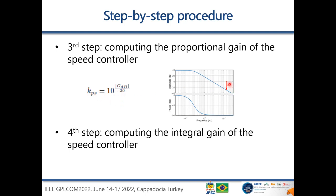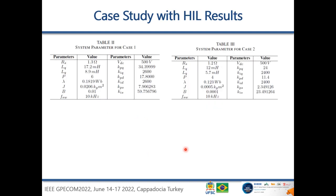The fourth step computes the integral gain of the speed controller using the previously derived quantities. Having completed the full step-by-step design procedure, it is applied to two different machines. Case one and case two have different system parameters — for instance, the first machine has six poles and the second has four poles. Following all the steps, the controller parameters are computed for both cases.